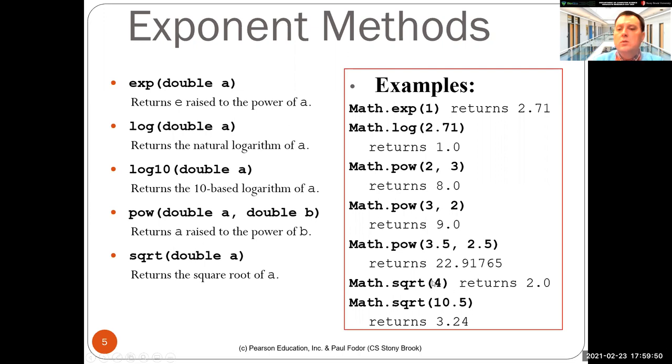Square root is the square root of the double. So square root of 4 is 2.0. Square root of 10.5 is 3.24. Square root of 9 is 3 and so on.